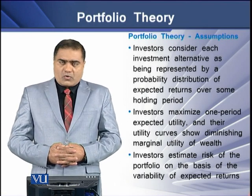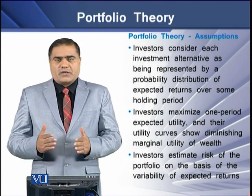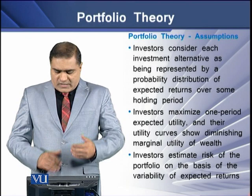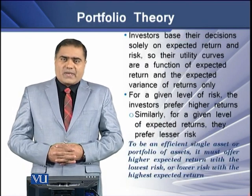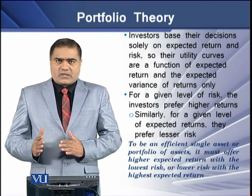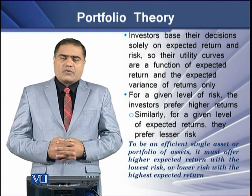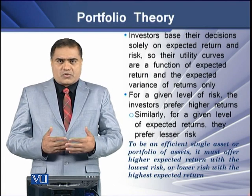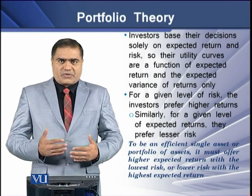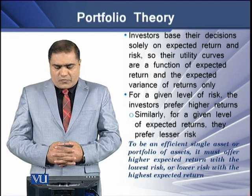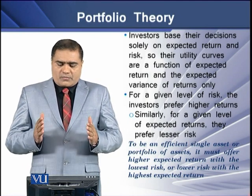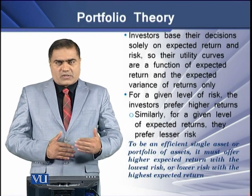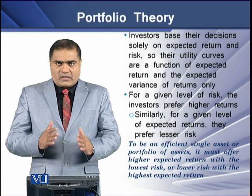Investors estimate the risk of the portfolio on the basis of variability of the expected rate of returns. So higher is the variation in the returns, larger is the riskiness associated with these returns. Investors base their decisions solely on the expected returns and the risk, so their utility curves are a function of expected return and the expected variance of the returns only. Risk and return determine the trade-off for the investor. For a given level of riskiness, the investors prefer higher returns, and for a given level of expected return, the investor will go for the investment that carries least riskiness.